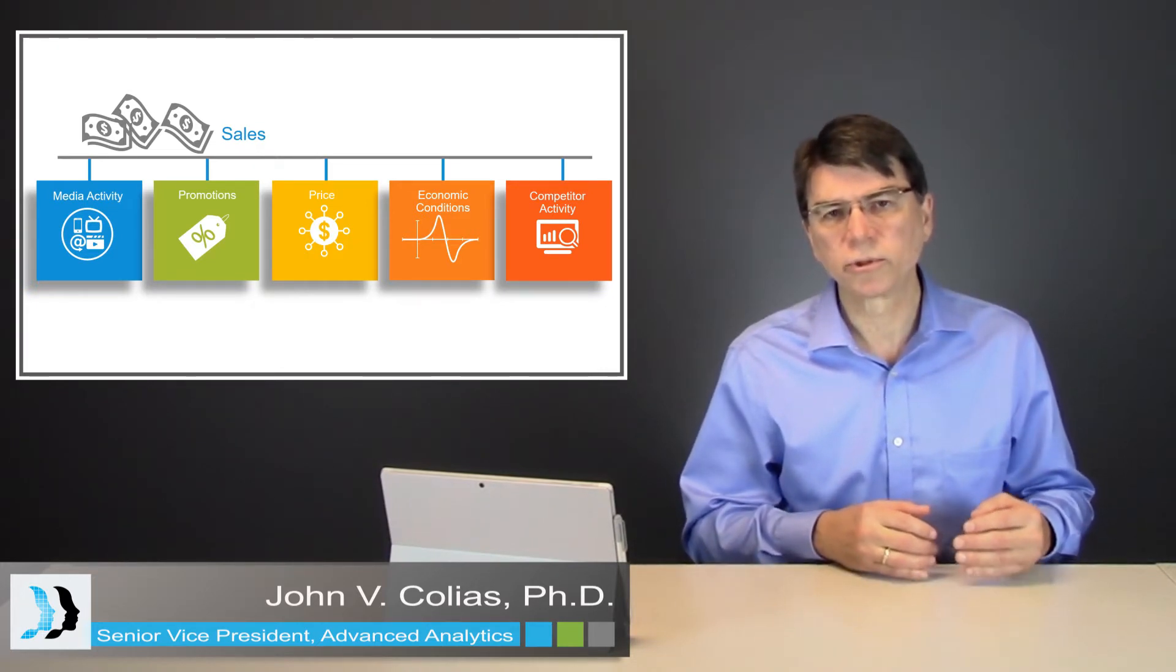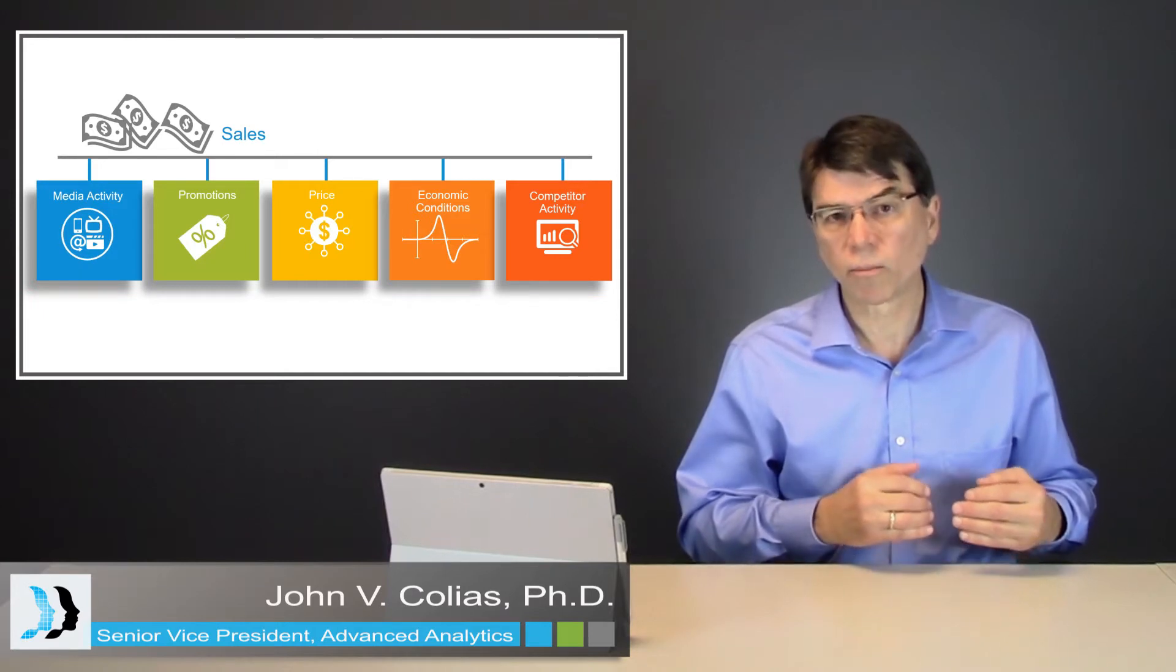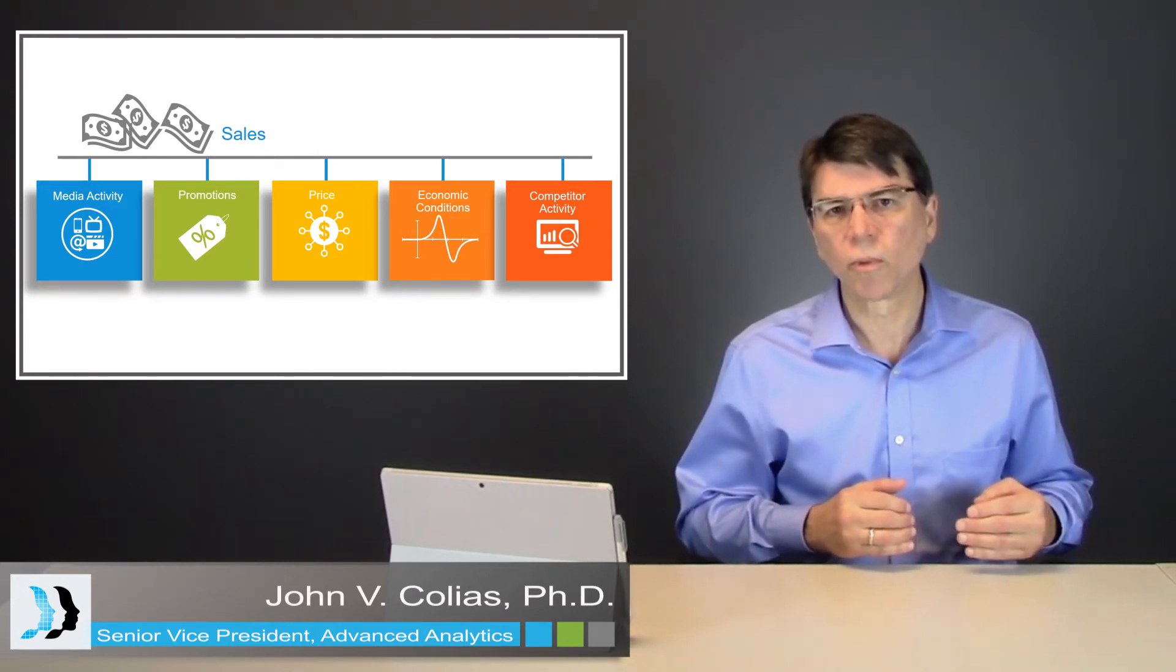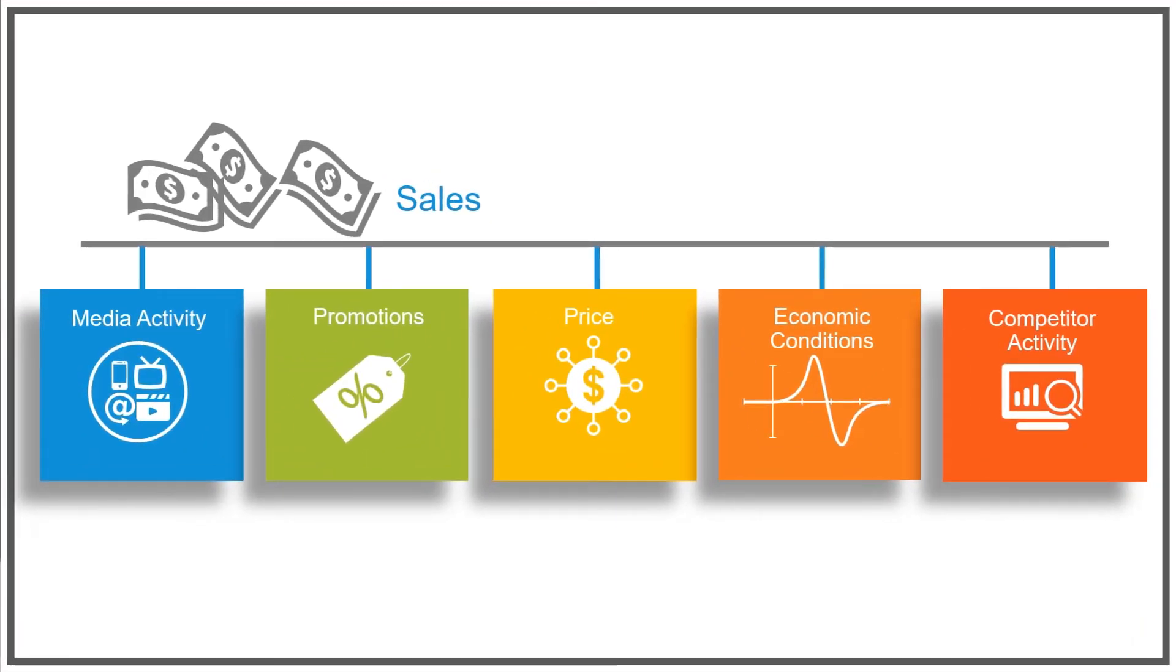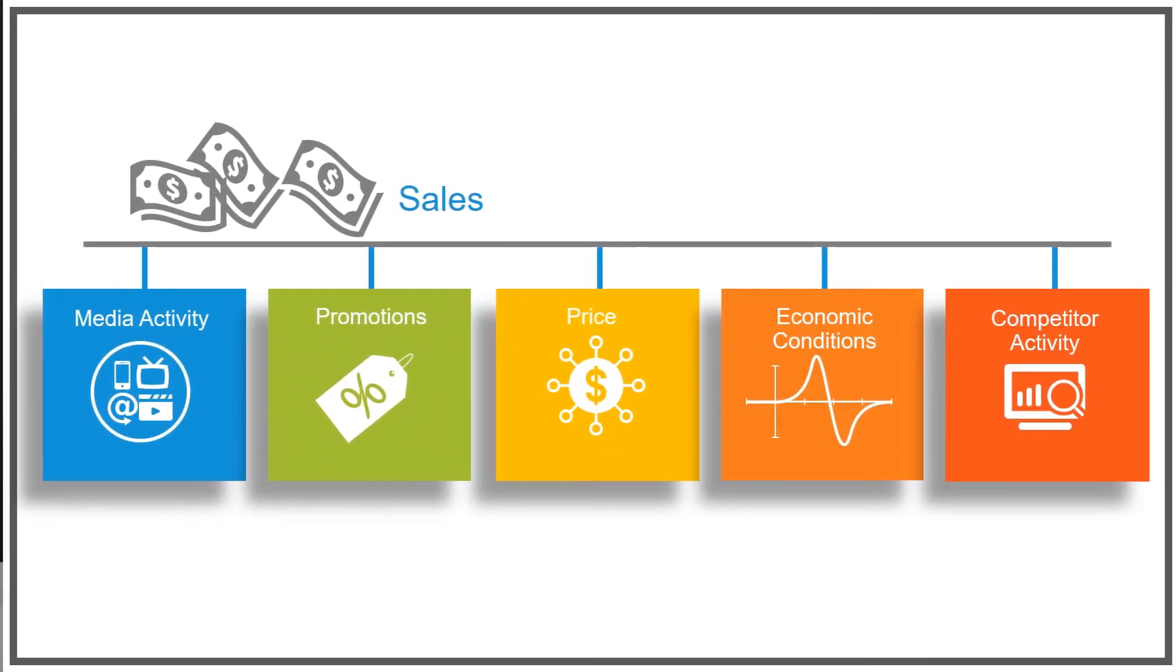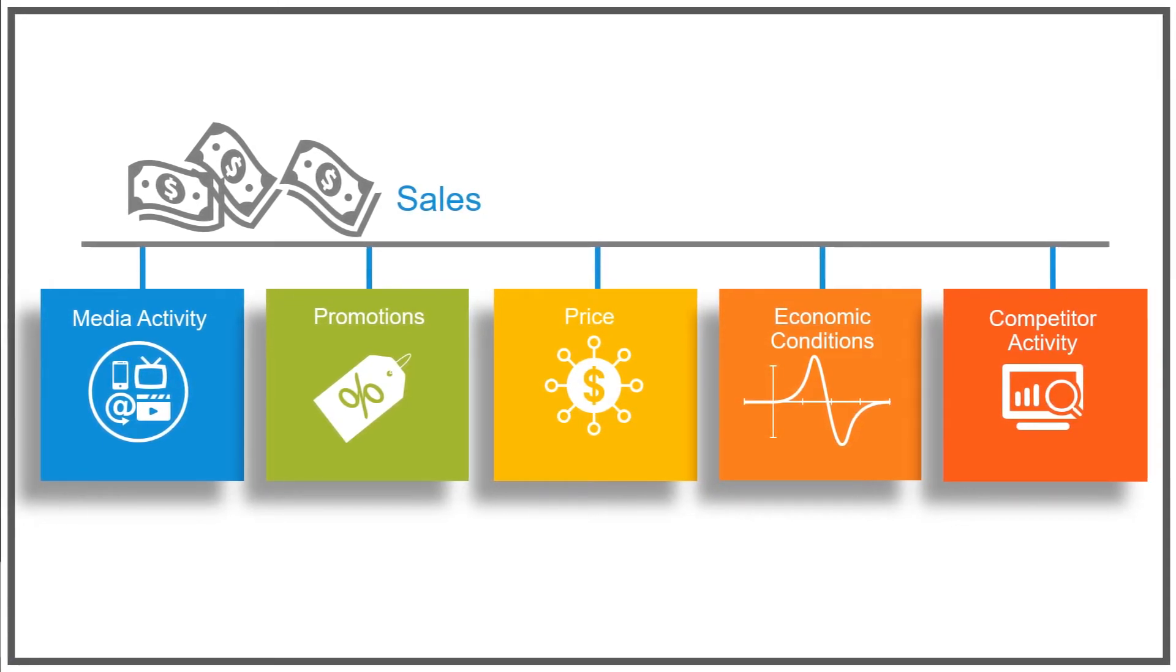For example, this is called marketing mix modeling. To do marketing mix modeling, we control for media activity, promotions, price, economic conditions, and competitor activity—these additional factors which also influence sales.